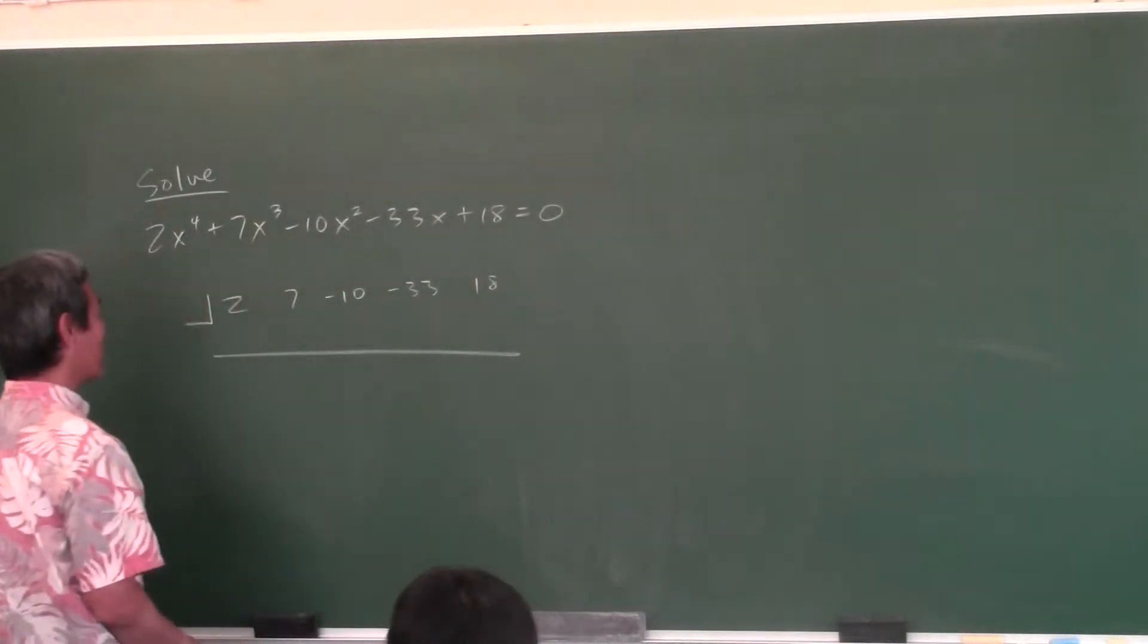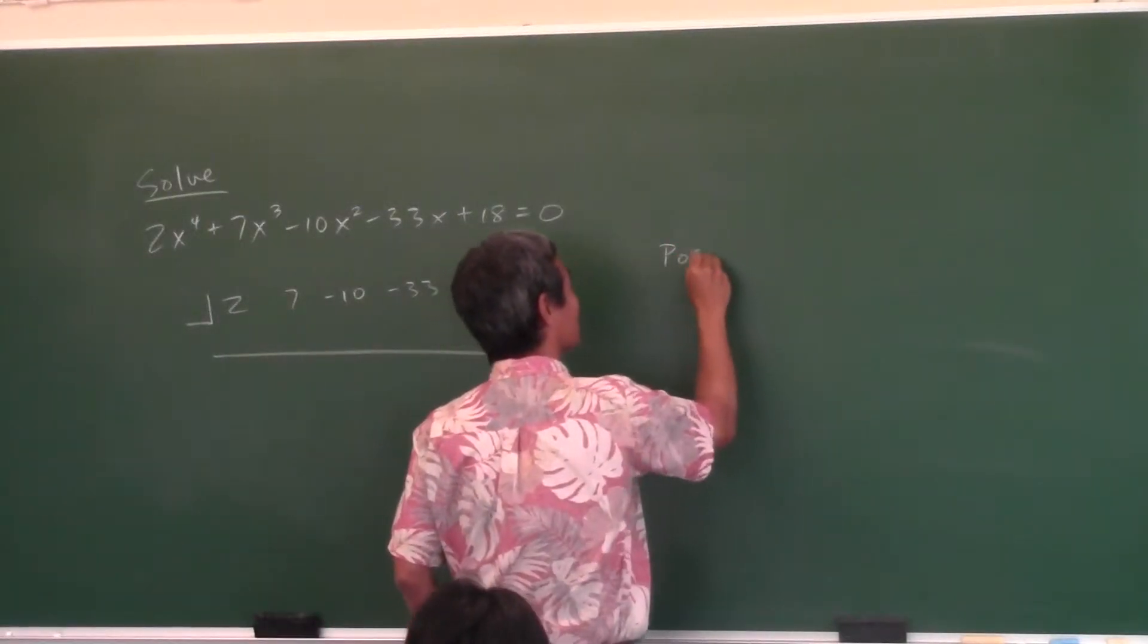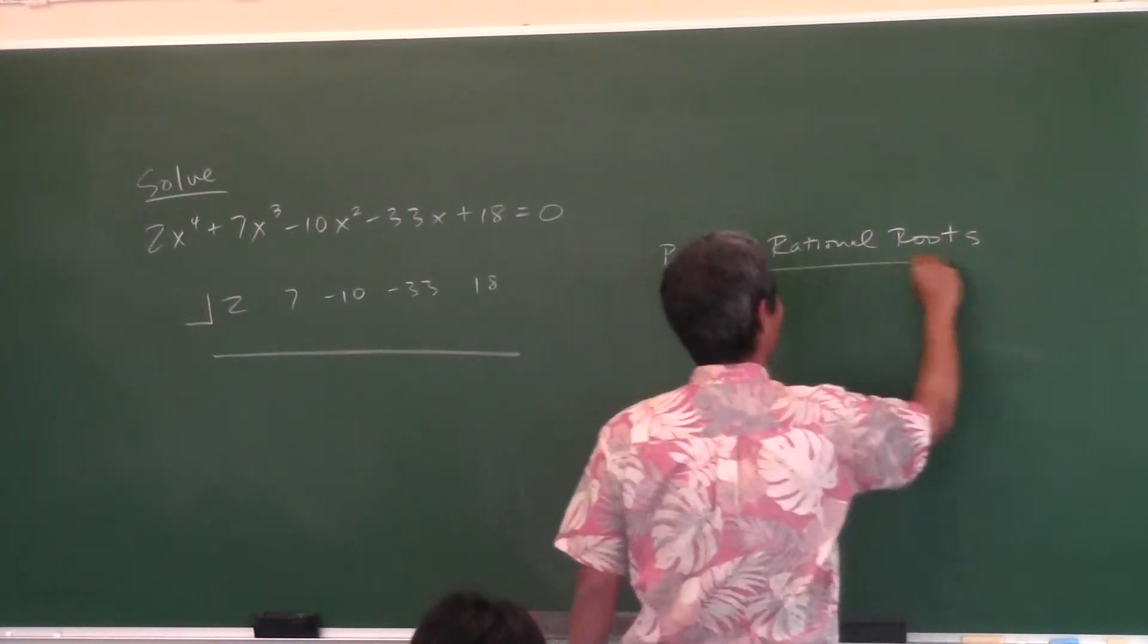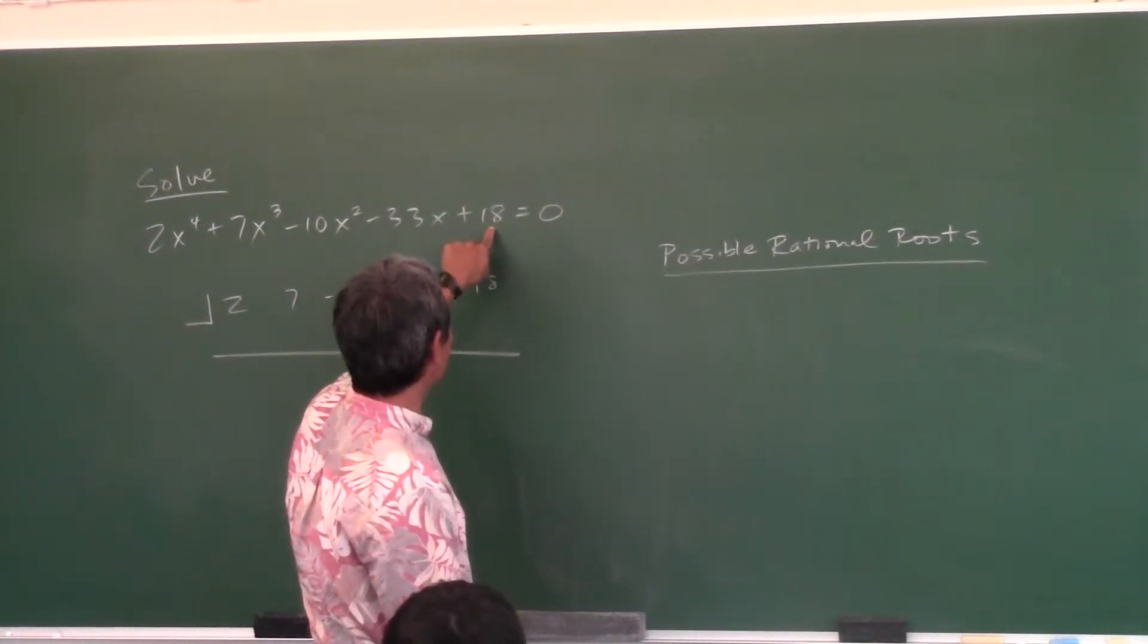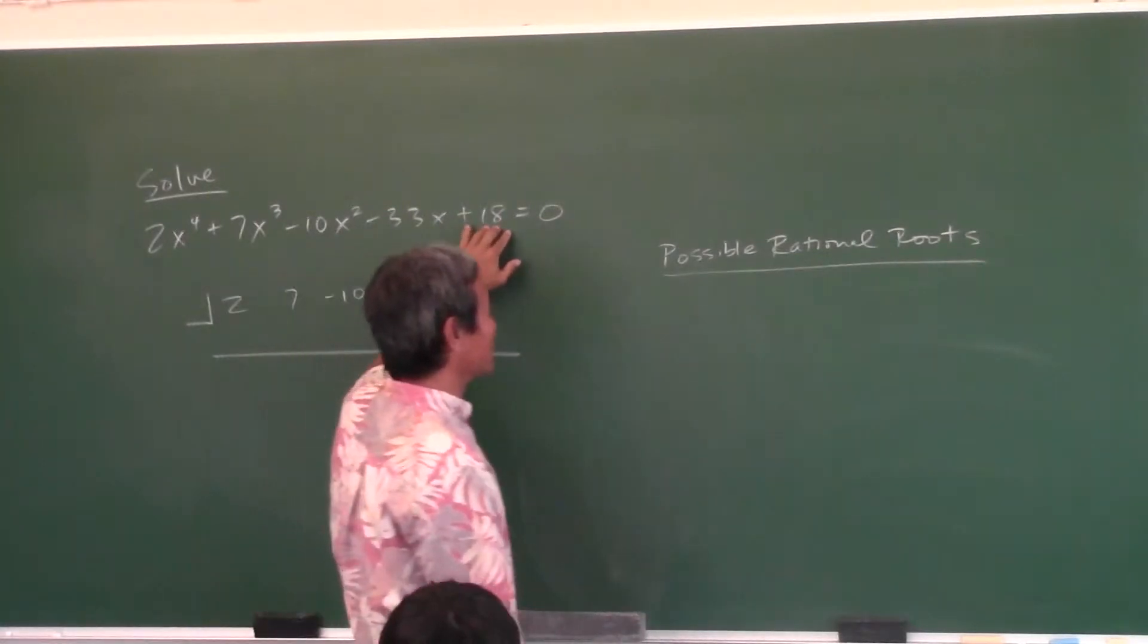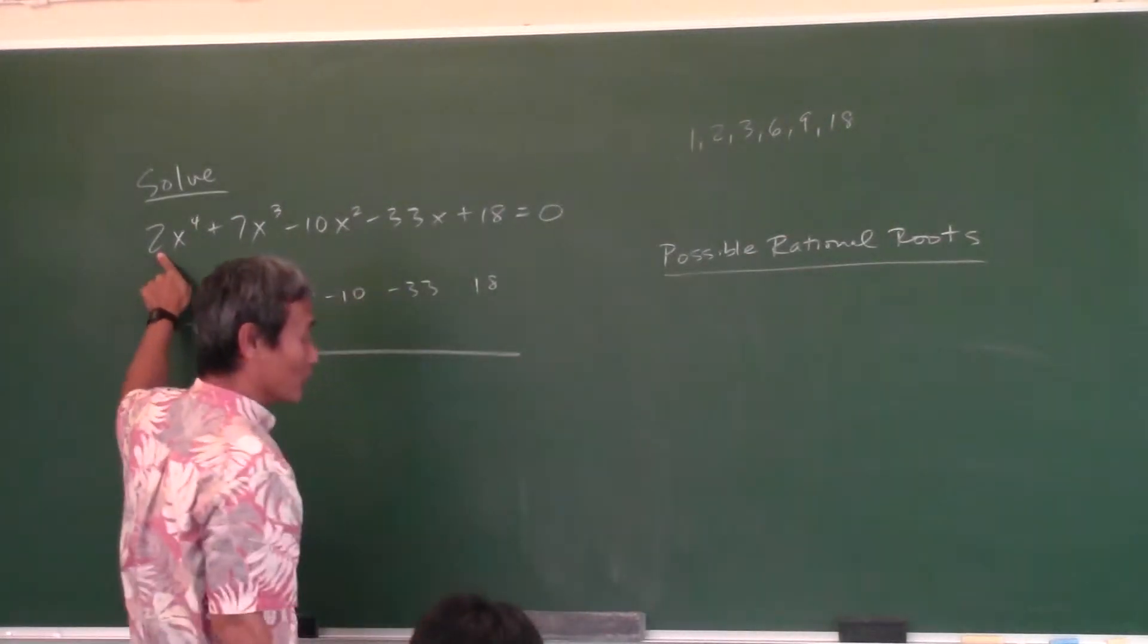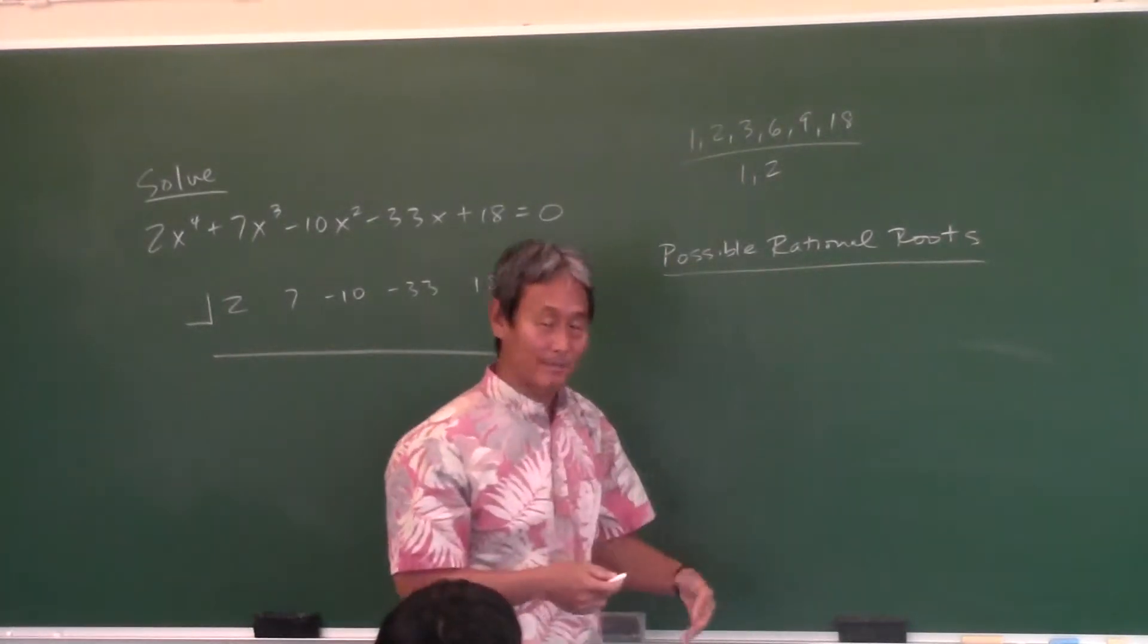Now like we were talking about yesterday, how do you figure out what number to put in the box? Yeah, you look at the possible rational roots. In fact, this is going to be a question on the next quiz: List the possible rational roots. So how do you do that? You look at the factors of the last one. If you remember anything from last year, this was P and this is Q. So what are the factors of 18? Well, it's plus or minus 1, plus or minus 2, plus or minus 3, plus or minus 6, plus or minus 9, plus or minus 18. What are the factors of 2? Plus or minus 1, plus or minus 2.